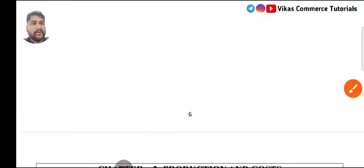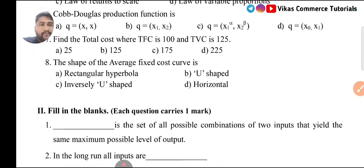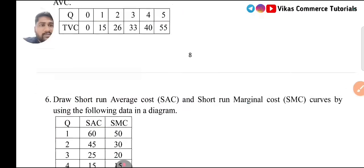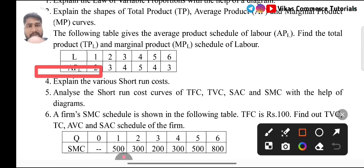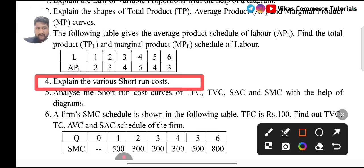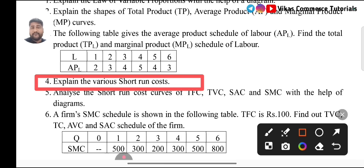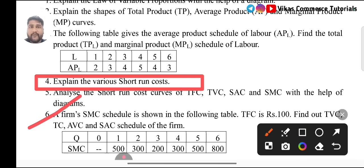Coming to the next chapter, Chapter 3: Production and Cost. This is also one of the important chapters. For 6 marks category, one of the most important questions is: explain the various short-run costs. There are approximately 4 to 5 types of costs you need to explain. I will also come with answers if time permits. Another important question is Question 6, which is a calculative, problem-solving type question. I will also make a video on these problem-solving questions with answers.